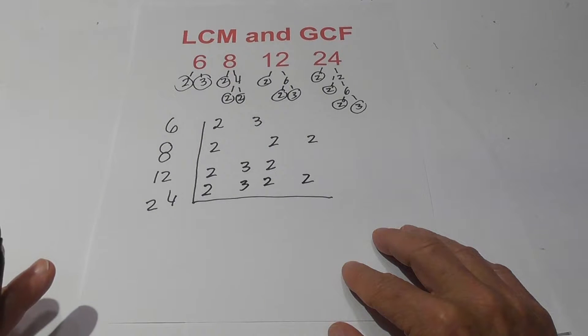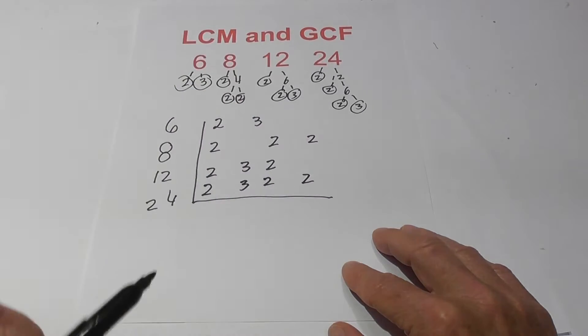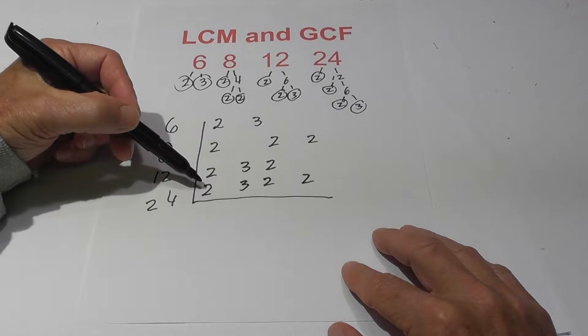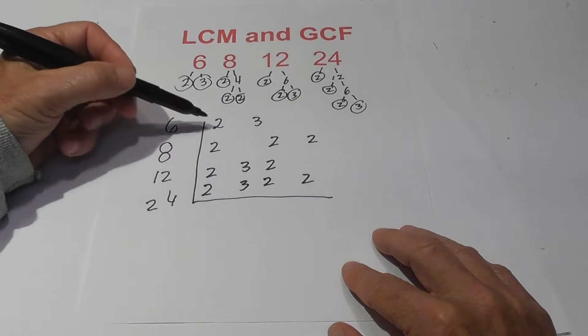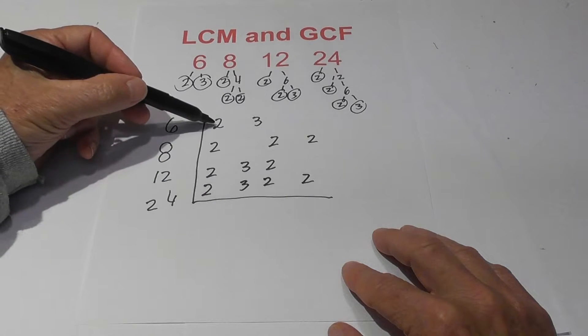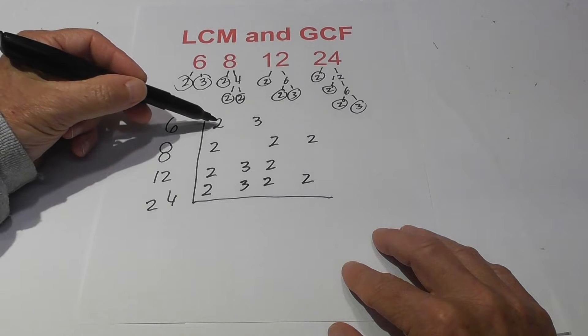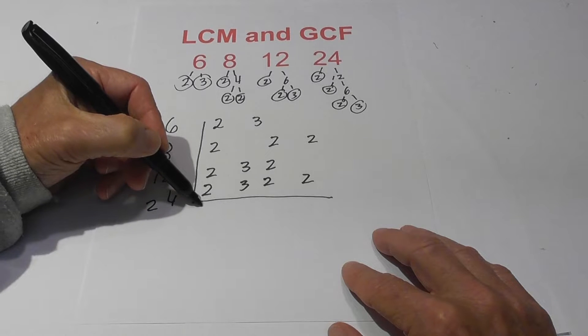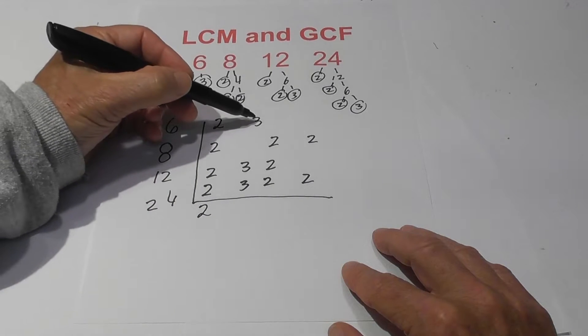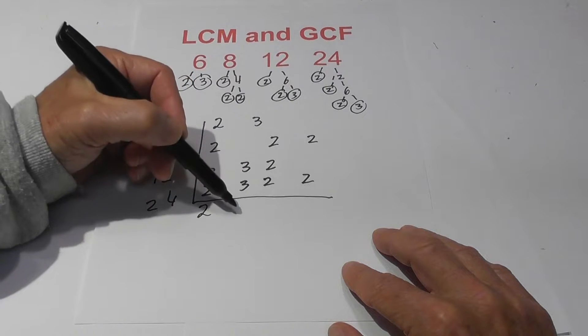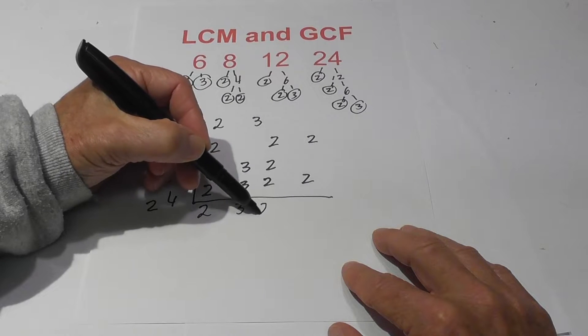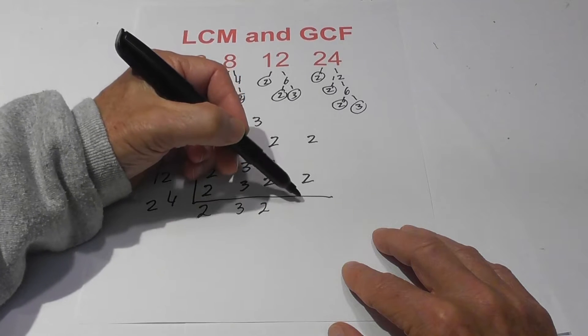So now all you do for the LCM is this. You basically multiply these variables together, but use this rule. If you have two or more numbers in the columns, in other words, you have this common prime factor in all of these numbers, then you only bring one number down. So since I have four twos, I'll just bring down the two. Here in this column, I have three threes, so I'll just bring one three down. I have three twos in this column, just bring one two down, and I have two twos in this column.